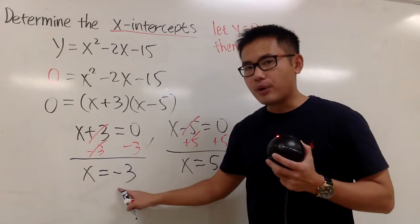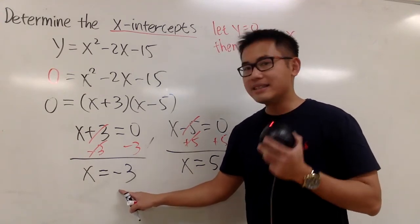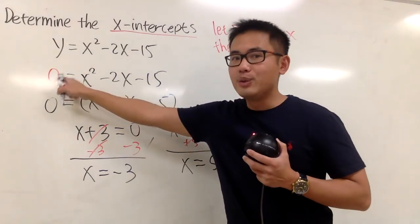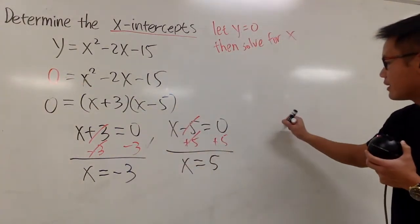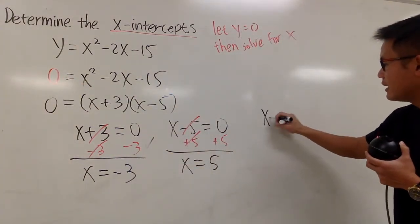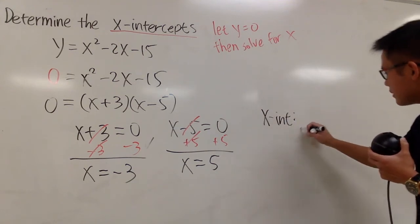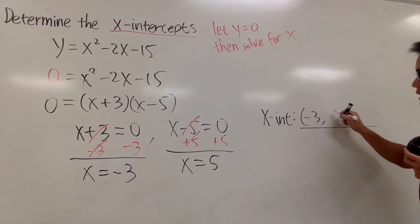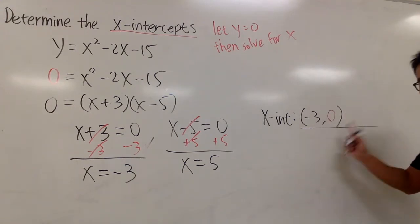This is the x value for the first x-intercept. x is negative 3, and y is equal to 0. So let's write it down right here. Remember, here are the x-intercepts. So for the first one, it's negative 3, the y is 0. This is the first one.